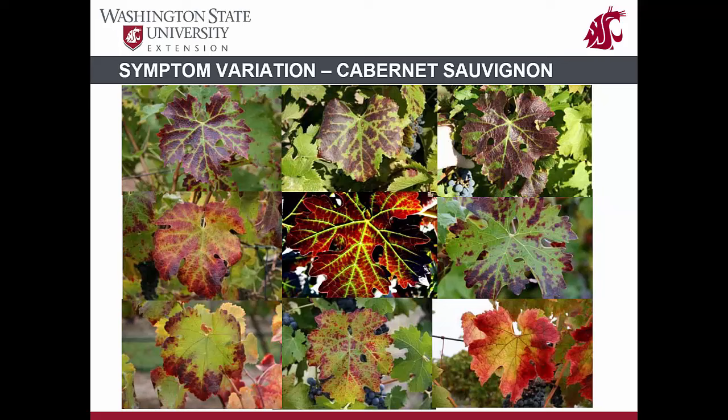Symptoms vary in a single cultivar and among cultivars. These pictures show distinct symptoms of leaf roll disease in a red-fruited cultivar like Cabernet Sauvignon. The leaf at the center shows typical leaf roll disease symptoms of Cabernet Sauvignon, consisting of green veins and interveinal reddening. Other leaves show a broad range of symptoms — some look like leaf roll symptoms and others show atypical symptoms — even though it is the same Cabernet Sauvignon cultivar.